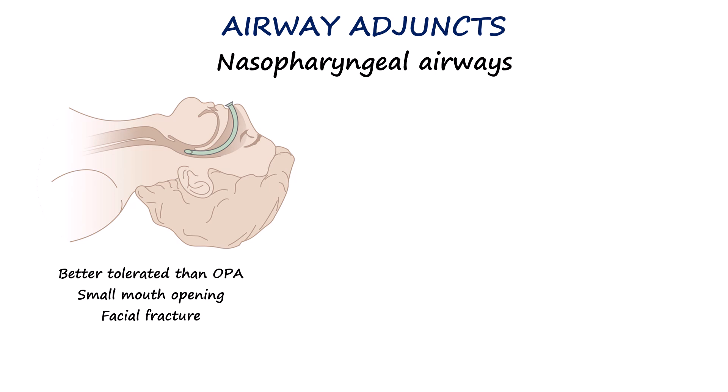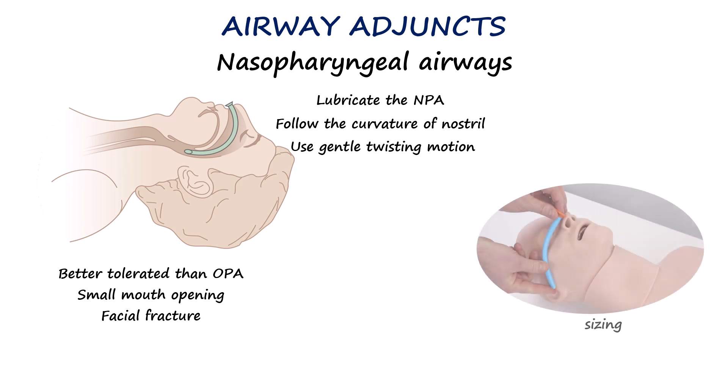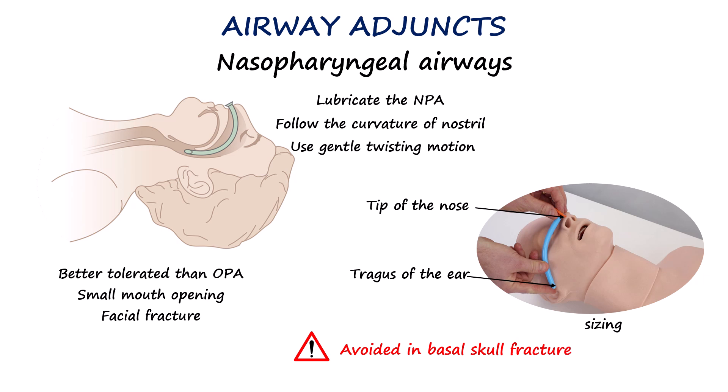To insert the nasopharyngeal airway, gently advance it into the chosen nostril with the bevel facing the septum, following the natural curve of the nasal passage. A gentle twisting motion may help if resistance is encountered. If insertion is difficult, do not force the tube; instead, rotate slightly or try the other nostril. The airway is correctly positioned when the flange rests against the nostril and the tip sits in the nasopharynx above the epiglottis. The correct size is chosen by measuring from the tip of the nose to the tragus of the ear. Nasopharyngeal airways should be avoided in cases of suspected basilar skull fracture due to the risk of intracranial placement.